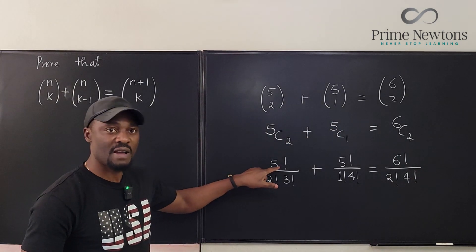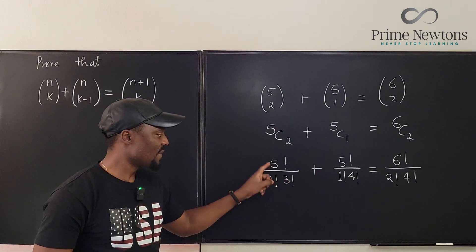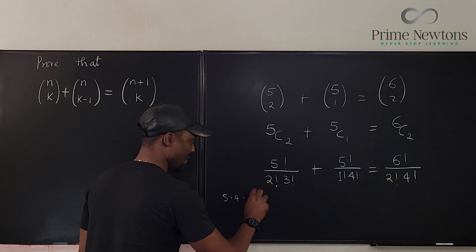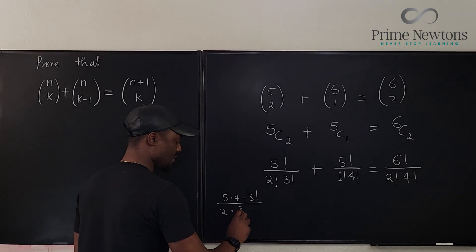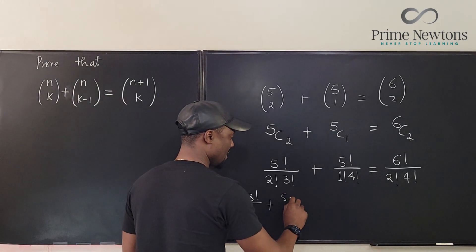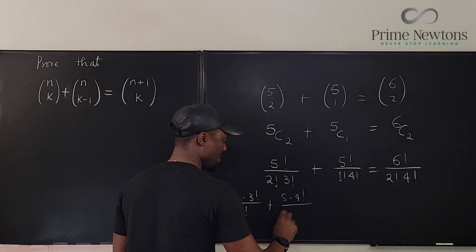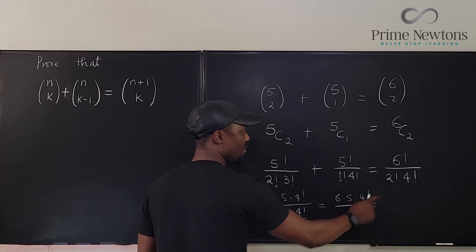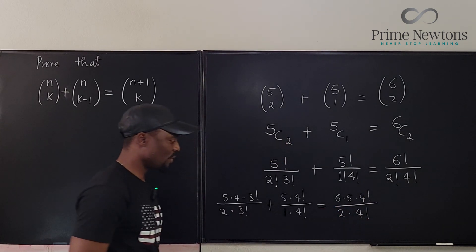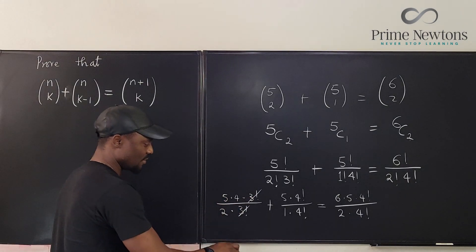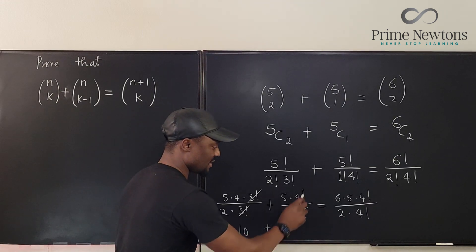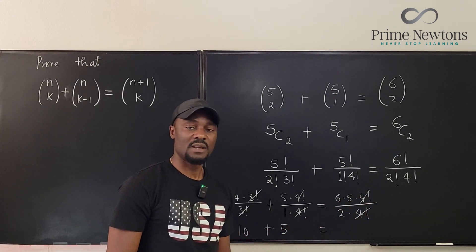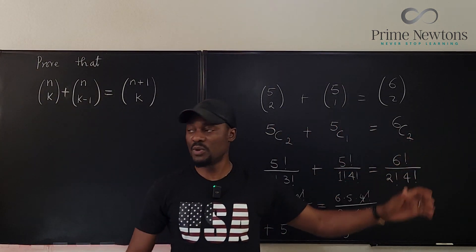So what we have here: we want to show that this plus this equals 6 factorial over 2 factorial times 4 factorial. Let's see if that is true. We can compute this because 5 factorial is 5 times 4 times 3 factorial, so that cancels. This is the same as 5 times 4 times 3 factorial over 2 factorial — which is 2 — and 3 factorial. Plus this is 5 times 4 factorial over 1 times 4 factorial. That equals 6 times 5 times 4 factorial over 2 times 4 factorial. The 4 factorials cancel: 20 divided by 2 is 10, and 5 remains. Then 6 times 5 is 30 and 30 divided by 2 is 15. So it looks like the formula always works.